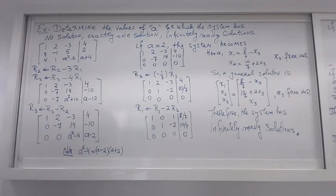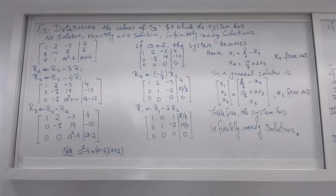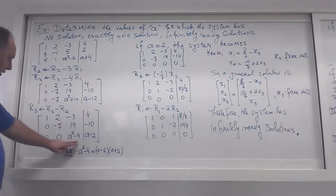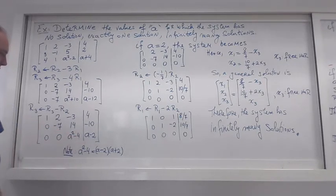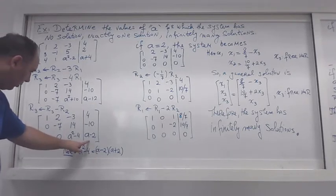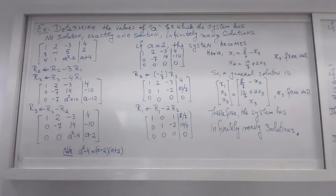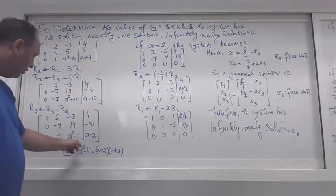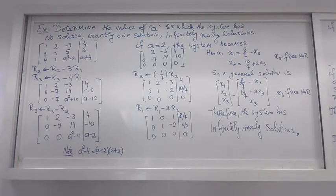We need to check what happens when a = 2, what happens when a = -2, and what happens when a is neither 2 nor -2. The cases are determined by the expressions we have here, so don't start dividing by anything — stop and identify the problematic values for parameter A first.